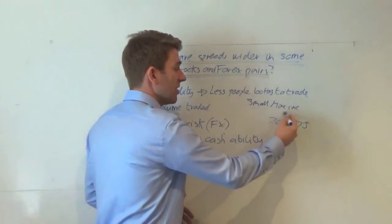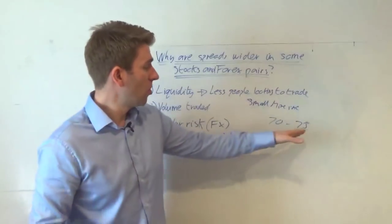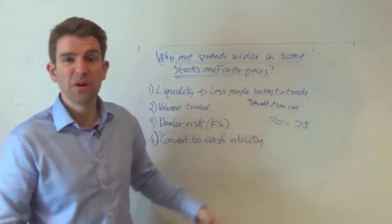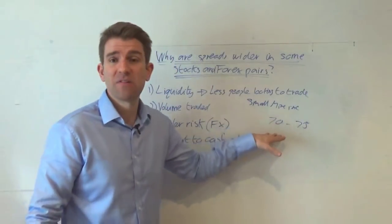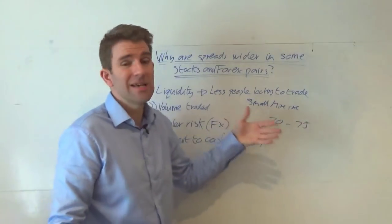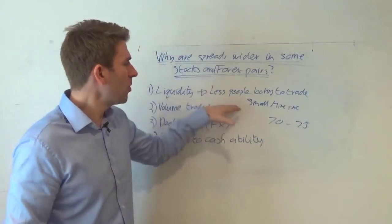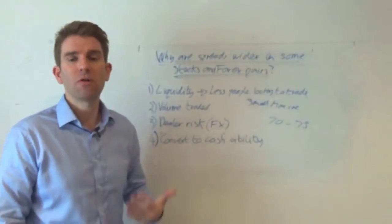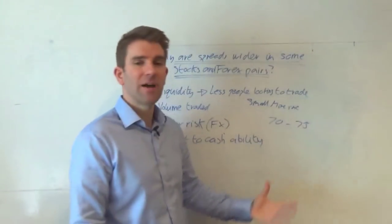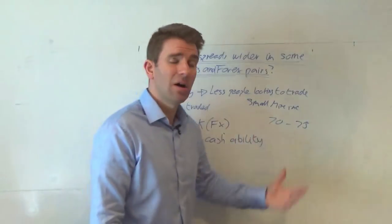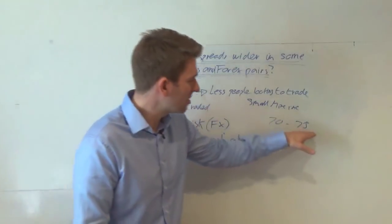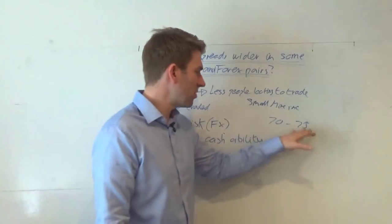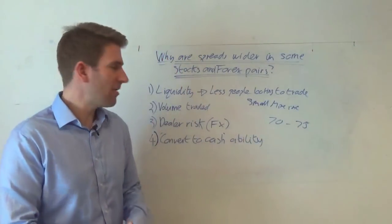When we're talking about less liquid shares or less liquid currency pairs, we don't have a lot of participants. Say we have a small mining company - Small Mine Inc. - listed on a small stock exchange, with a price of 70-75. That might be the bid-ask spread purely because not many people trade it. Not many participants are interested, so we haven't got someone coming in saying 'I'll pay 71, I'll pay 72,' causing the spread to tighten.